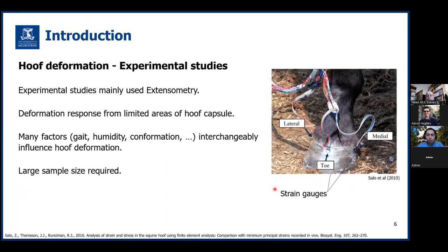Experimental studies on hoof deformation mainly used the extensometry method, which attaches strain gauges on the hoof wall to measure strains during locomotion. But with this method, the deformation response can be obtained at limited surface areas of a hoof capsule. Also, since many factors such as equine gait, environmental humidity, and hoof conformation interchangeably influence hoof deformation, a large sample size is needed to find a direct correlation between each factor and the hoof deformation.